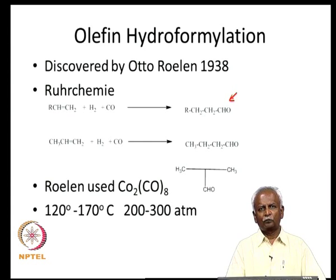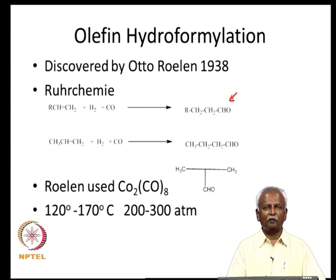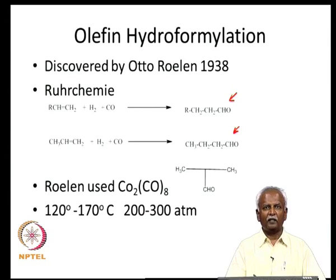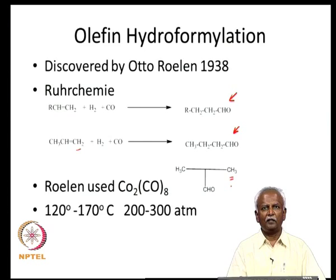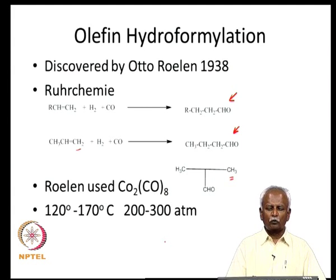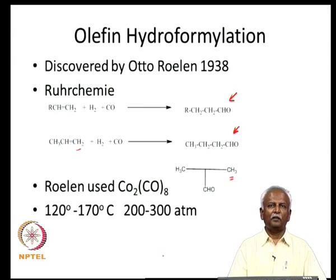This reaction is extremely useful because it converts alkenes in the presence of hydrogen and carbon monoxide to very useful aldehydes. It is possible for this reaction to give you an isomer. For example, the hydroformylation of propylene with H₂ and CO gives butyraldehyde (the normal aldehyde) and isobutyraldehyde (the isomer), formed when hydrogen adds to the terminal carbon. This isomer formation is a complication, and the main improvements in this reaction have focused on improving selectivity.